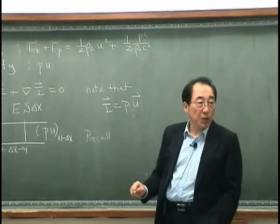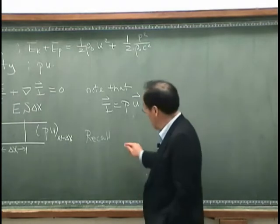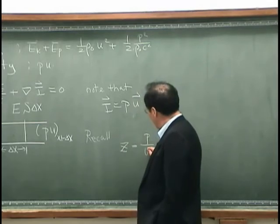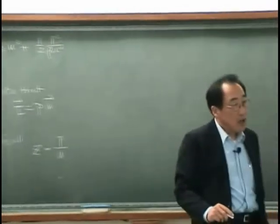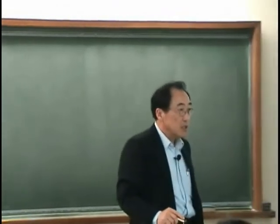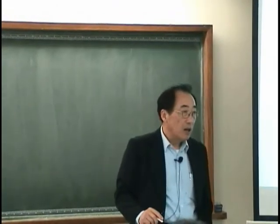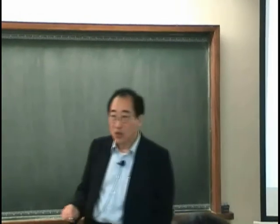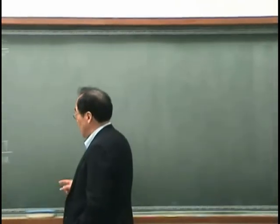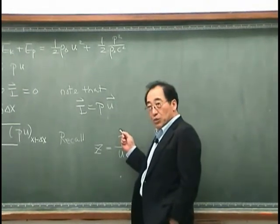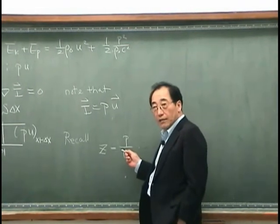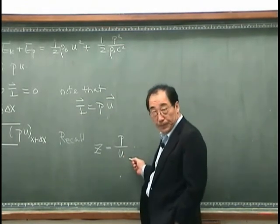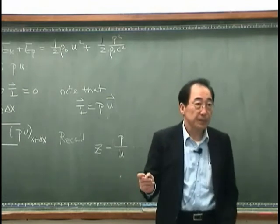That is Z is P over U. That is not a vector quantity, but it's the ratio between pressure and U. It certainly expresses the relation between force and velocity, or in other words, the relation between input and output.